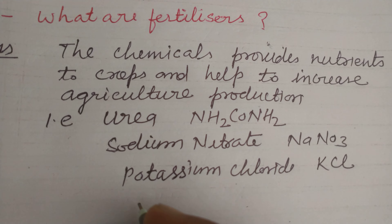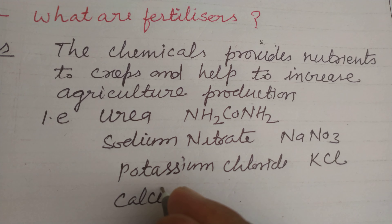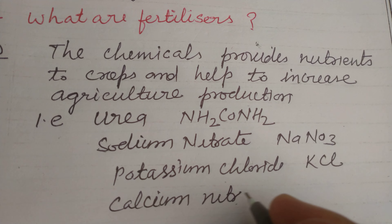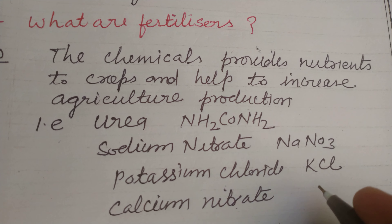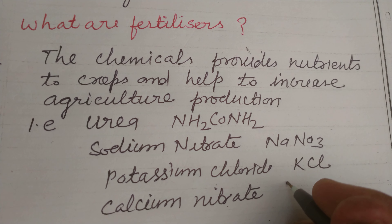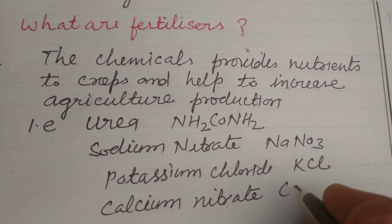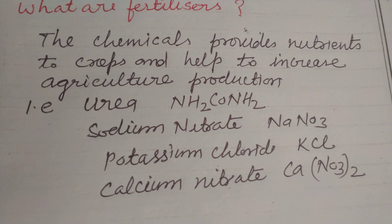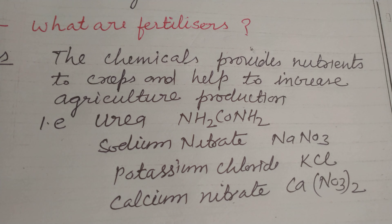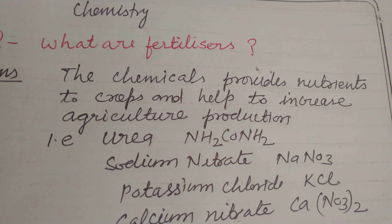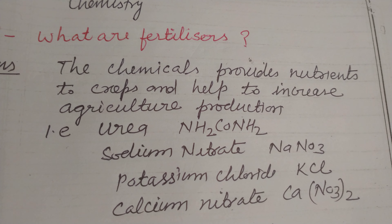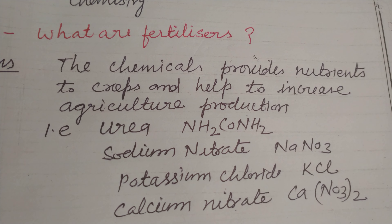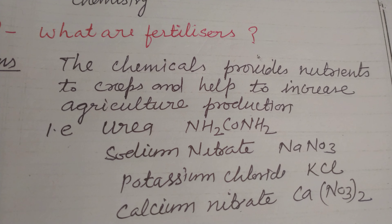Calcium nitrate, Ca(NO3)2. So these are a few fertilizers which are used in agriculture to grow and increase agricultural production.